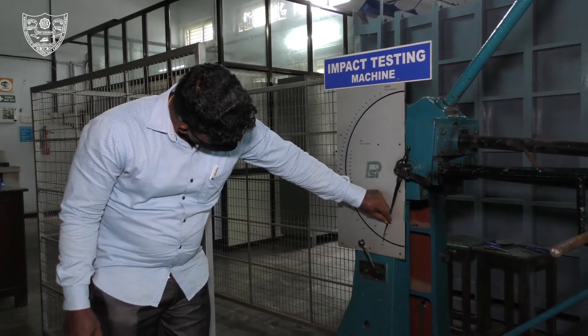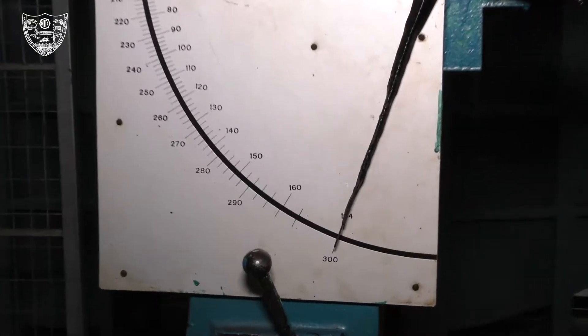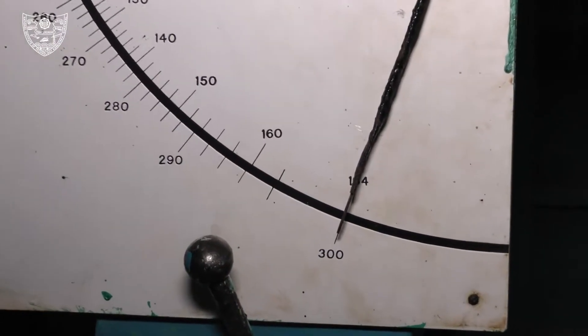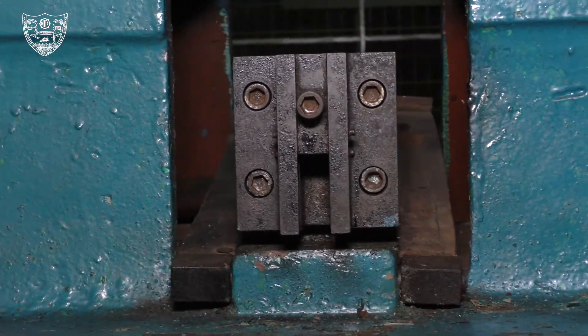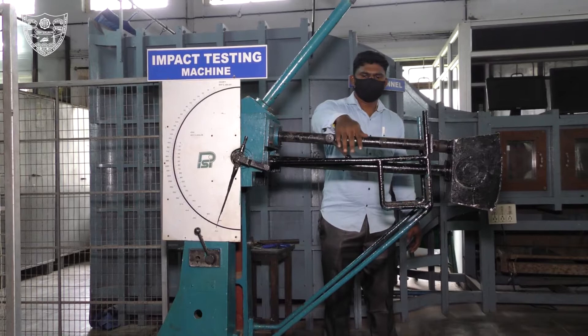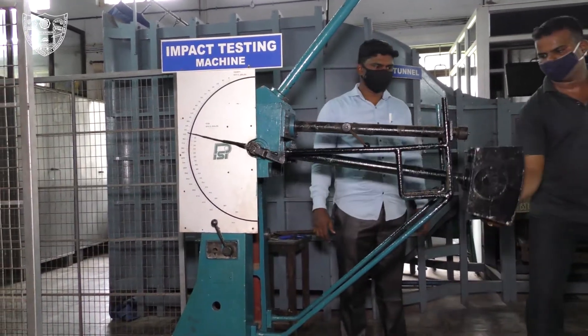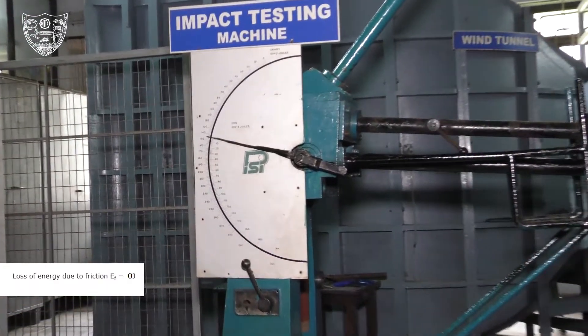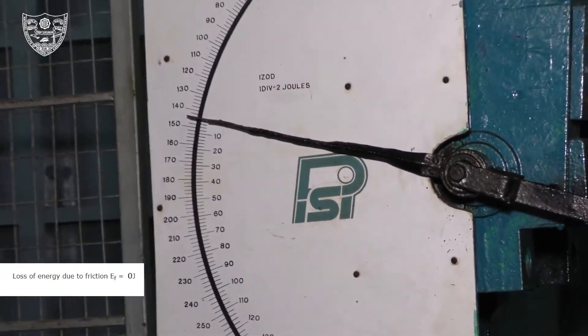Adjust the initial reading to 164 joules. Now to check the friction loss, release the pendulum without specimen on the machine anvil. Note the loss of energy due to friction.